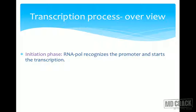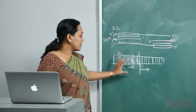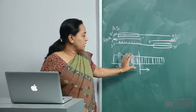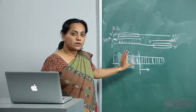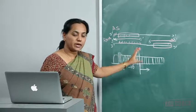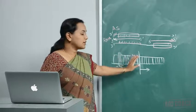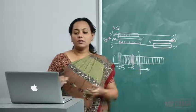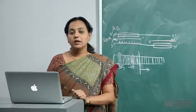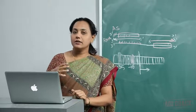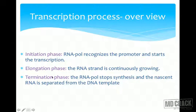In the initiation phase, the RNA polymerase recognizes the promoter and starts transcription. It recognizes the minus 35 sequence and binds at the minus 10 region — the CAАТ box and the TATA box. In the elongation phase, the RNA strand is continuously growing. In the termination phase, the RNA polymerase stops synthesis and the nascent RNA is separated from the DNA template.